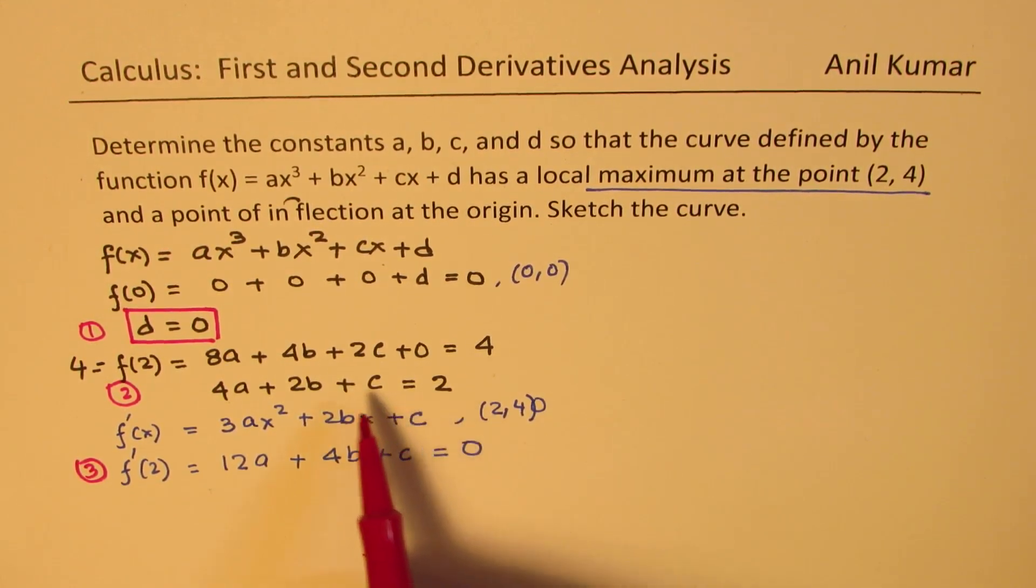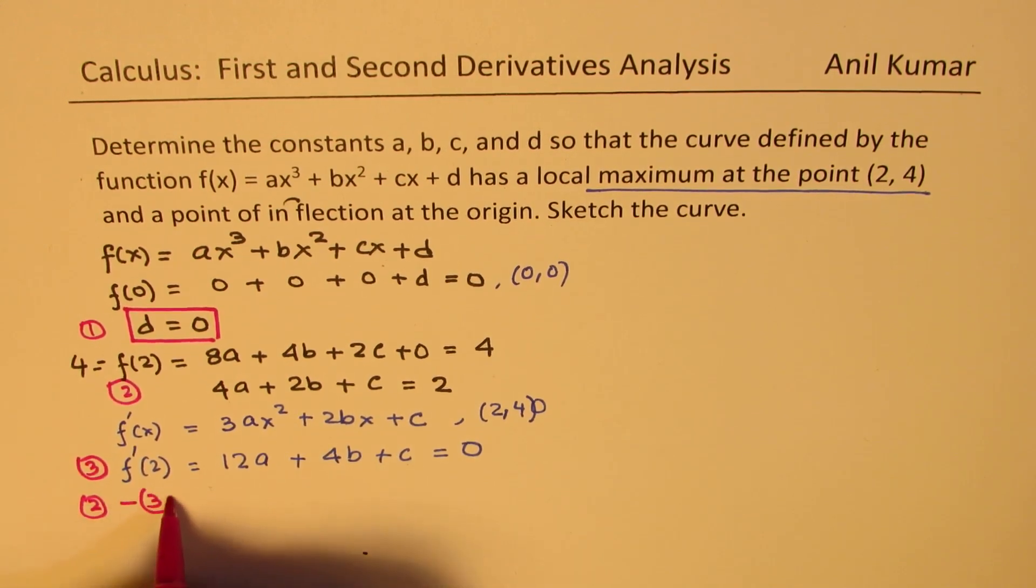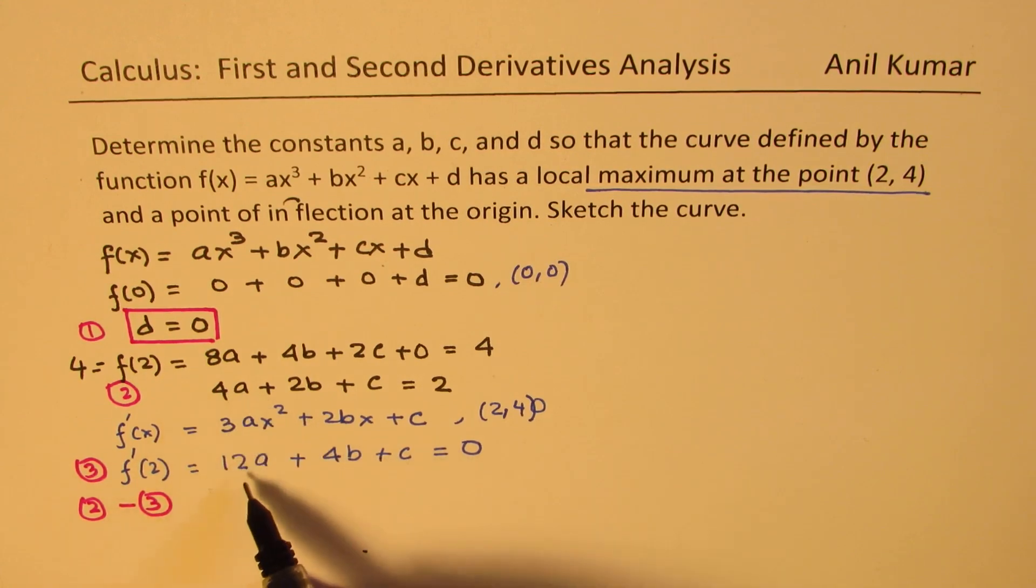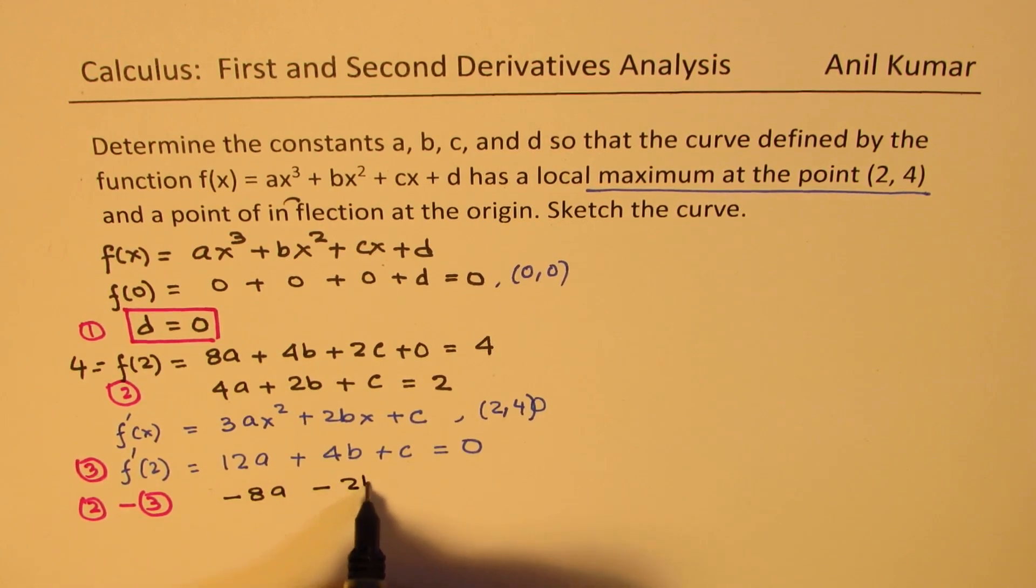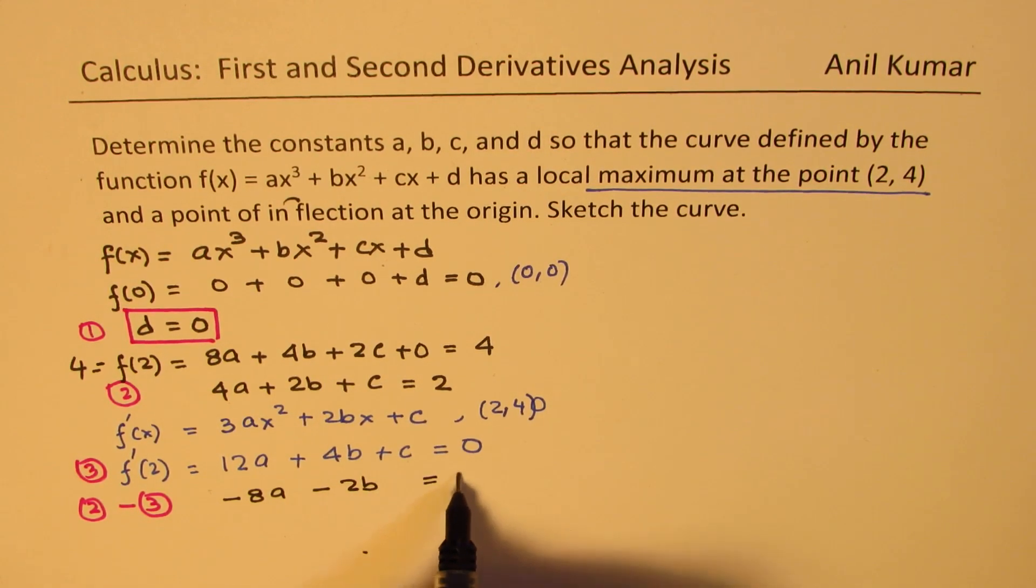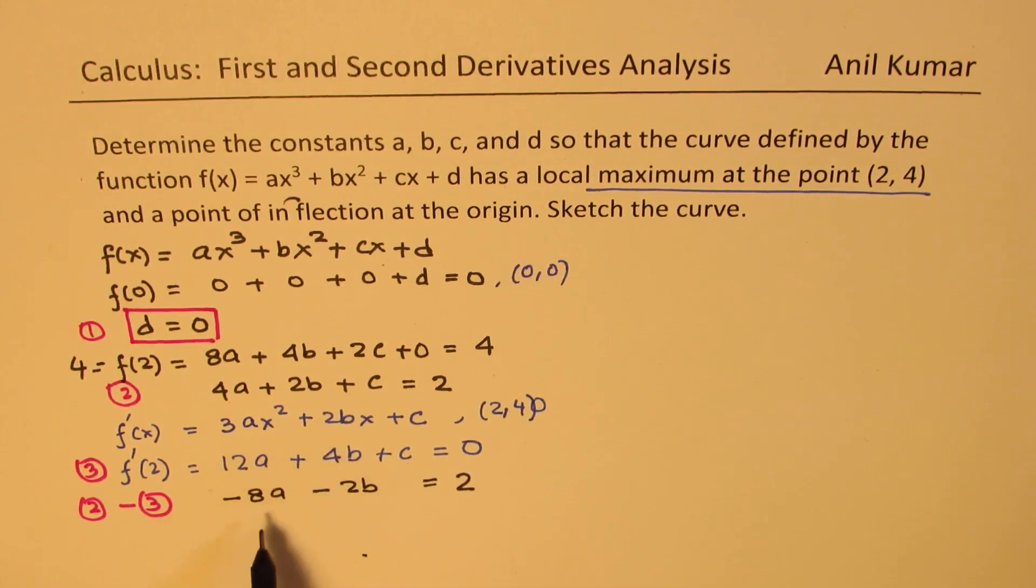Now, from equation 2 and 3, we can eliminate c. So let's do that. So we can do equation 2, take away equation 3. So if I do equation 2 take away equation 3, we get here -8a, and here we get -2b, that becomes 0, we get 2. Well, it can be simplified, and then we can write this as dividing all by 2. We could write this as -4a - b = 1. We'll call this as our equation number 4.